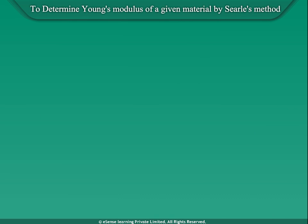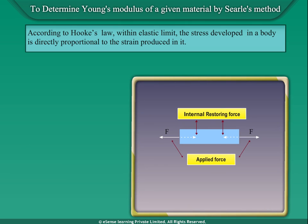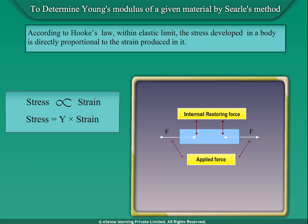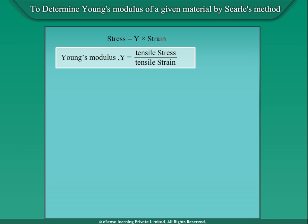Introduction: According to Hooke's Law, within elastic limit, the stress developed in a body is directly proportional to the strain produced in it. The ratio of the stress to the corresponding strain within the elastic limit is called the modulus of elasticity. Young's Modulus Y is defined as the ratio of tensile stress to the tensile strain.